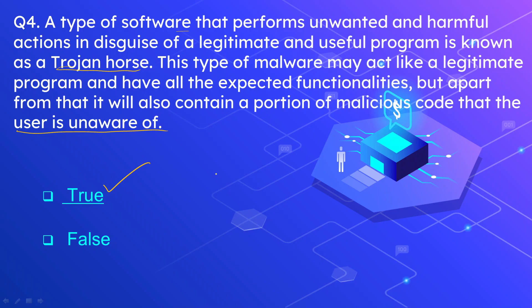A trojan is a malware — a software where on the front end there is a legitimate software, such as a game. You downloaded a game from a Play Store or Apple Store, and on the back side of this game there is malicious code gathering information that the user is unaware of. This type of software is known as a trojan horse.